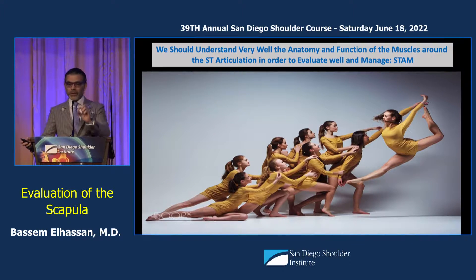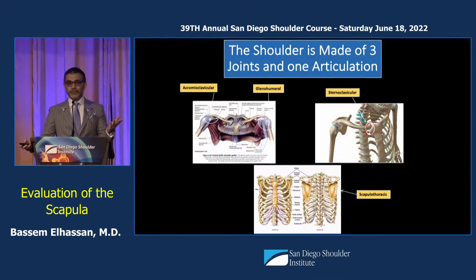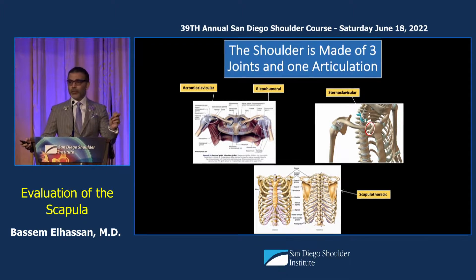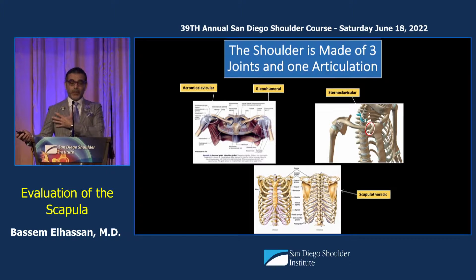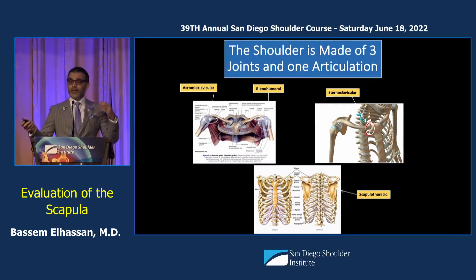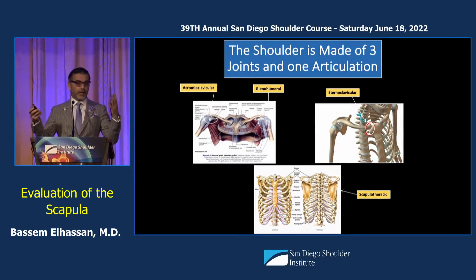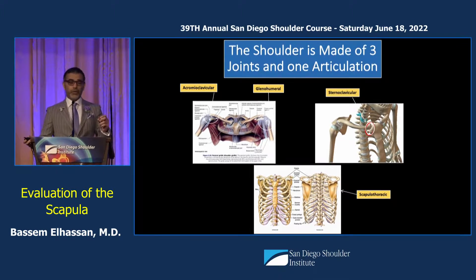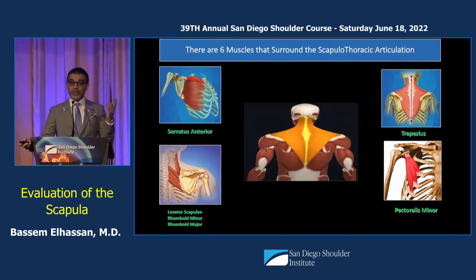We should understand the anatomy like anything else. The shoulder is not just the glenohumeral joint — the shoulder is the shoulder girdle and the proximal part of the chest. That includes SC, AC, scapulothoracic, and glenohumeral. Any bony pathology or muscle pathology can lead to STAM.